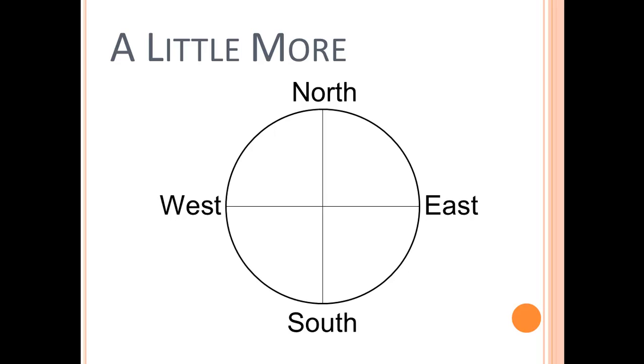We can add a little more. We can take our previous compass rose and add two more evenly spaced diameters. And now we can identify the locations between the cardinal points. So between North and West, we have Northwest. Between South and West, we have Southwest.